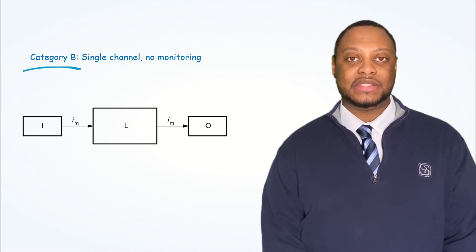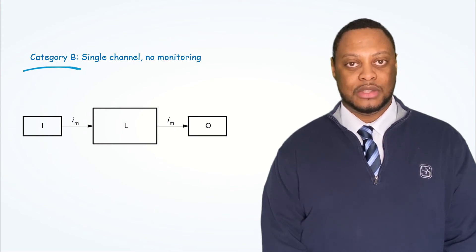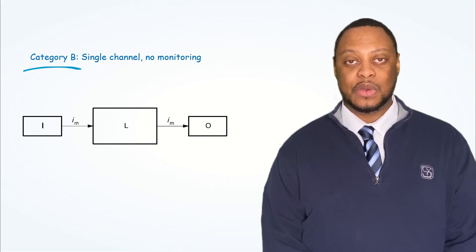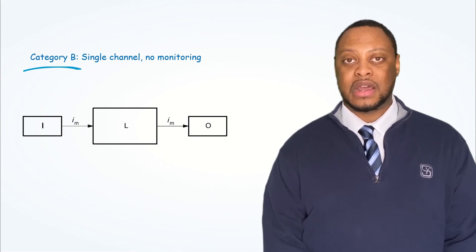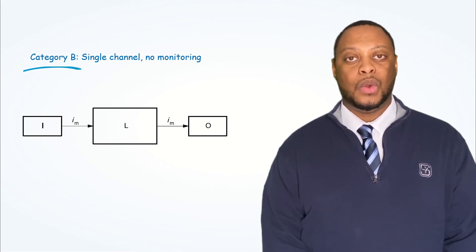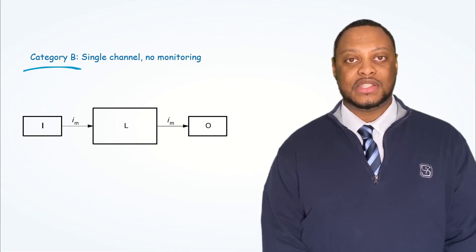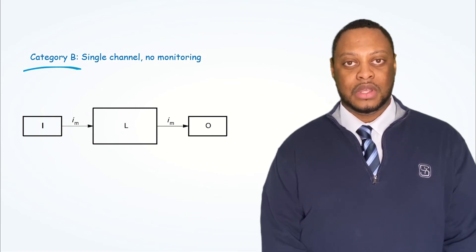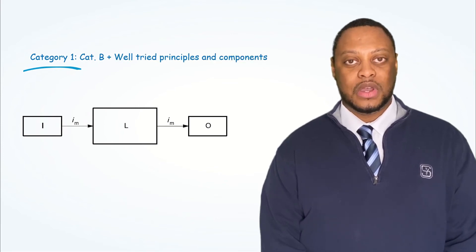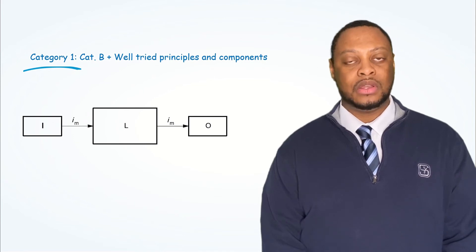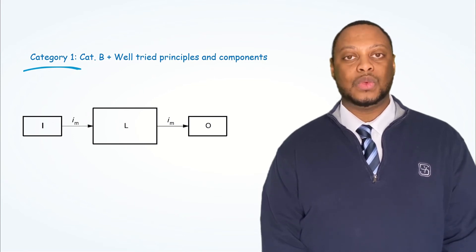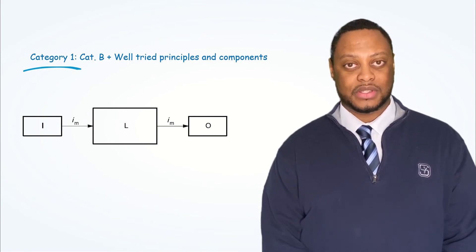Category B is the baseline for machine safety control systems — it is a single channel with no monitoring. One failure and you lose your safety function. Category 1 is the same idea: single channel, no monitoring, but we're using well-tried principles and components.